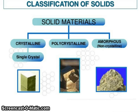Solid materials are further classified as crystalline, polycrystalline, amorphous, non-crystalline, and single crystals. You can see here in the picture: single crystals, polycrystalline, and amorphous.